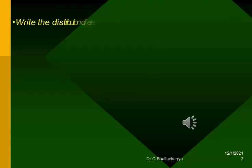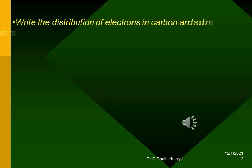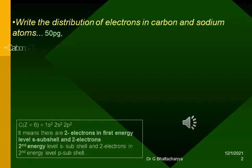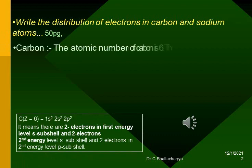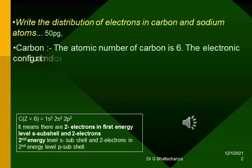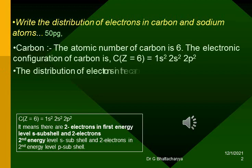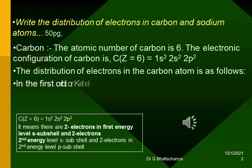Write the distribution of electrons in carbon and sodium atoms. In the first orbit or K-shell equals 2 electrons, in the second orbit or L-shell equals 4 electrons, or we can write the distribution of electrons in a carbon atom as 2, 4.